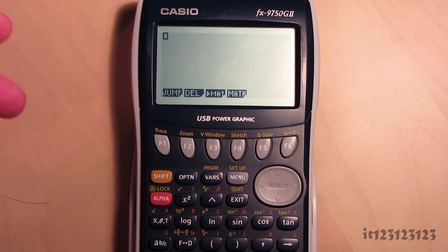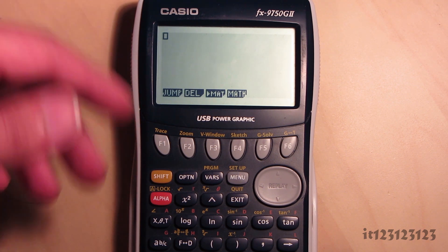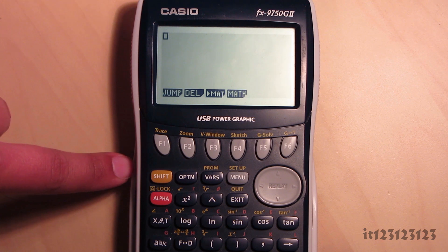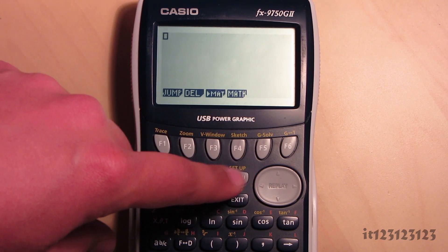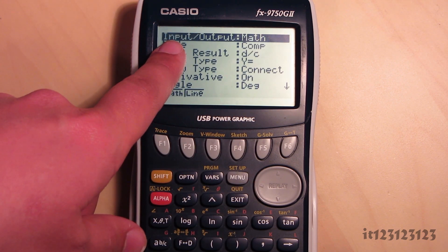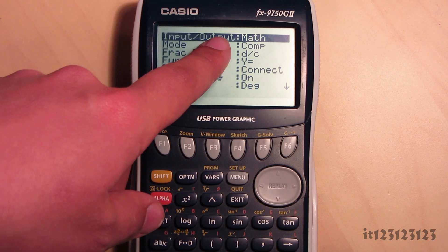So the first thing you need to do is check that your calculator is set to the math input mode. To do this, press shift and then menu. At the top it will say input output, and this is only if you've upgraded your calculator.